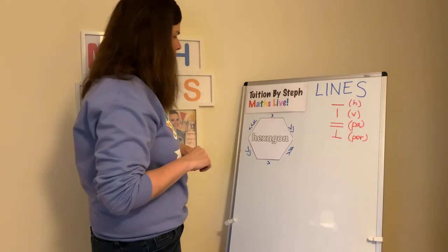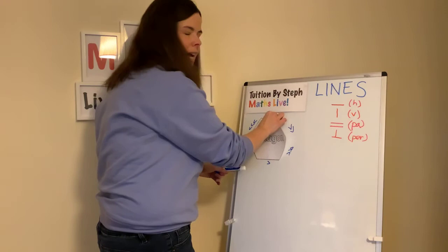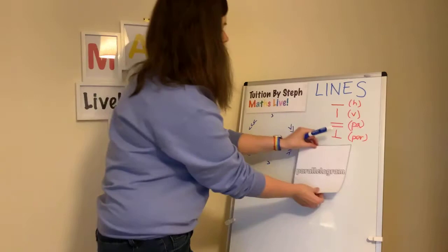Six sides in total, but three pairs. Does it have any perpendicular lines? No. Like the previous shape, all the angles are obtuse — they do not meet at a right angle. So there you go.